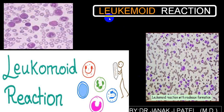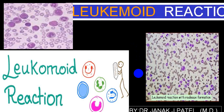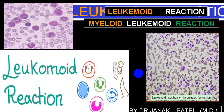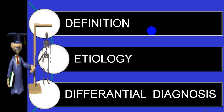The meaning is very simple: 'lekem' is leukemia and 'oid' means similar or like, so it is called leukemoid reaction. It is like leukemia but it is not leukemia. It is also called a myeloid leukemoid reaction because the majority of the time it involves the myeloid series. We'll be discussing under three headings: definition, etiology, and how to differentiate it from leukemia — particularly chronic myeloid leukemia, which is the very close differential diagnosis.